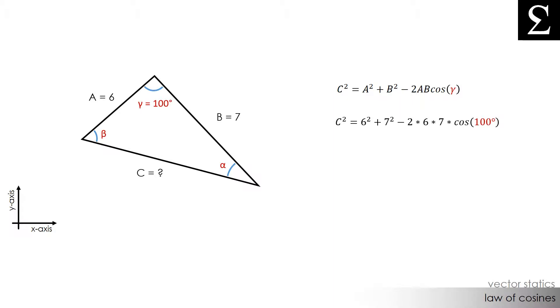Now when we plug in our values, we see that c squared is equal to roughly 99.6, and when we take the square root of both sides, we see that c is equal to 9.98.